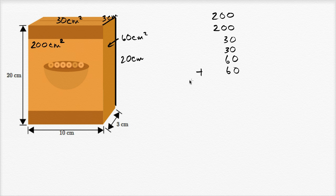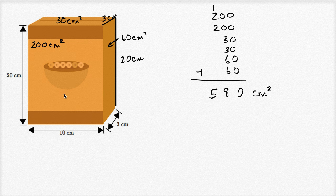Now we can just add up all of these together. We get 200 plus 200 plus 30 plus 30 plus 60 plus 60, which gives us 580 square centimeters as the surface area of this box.